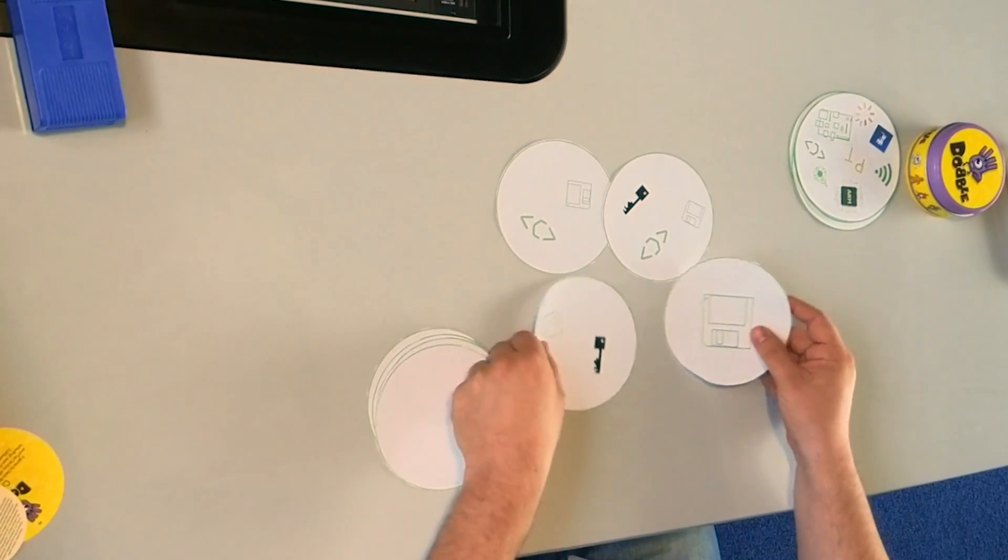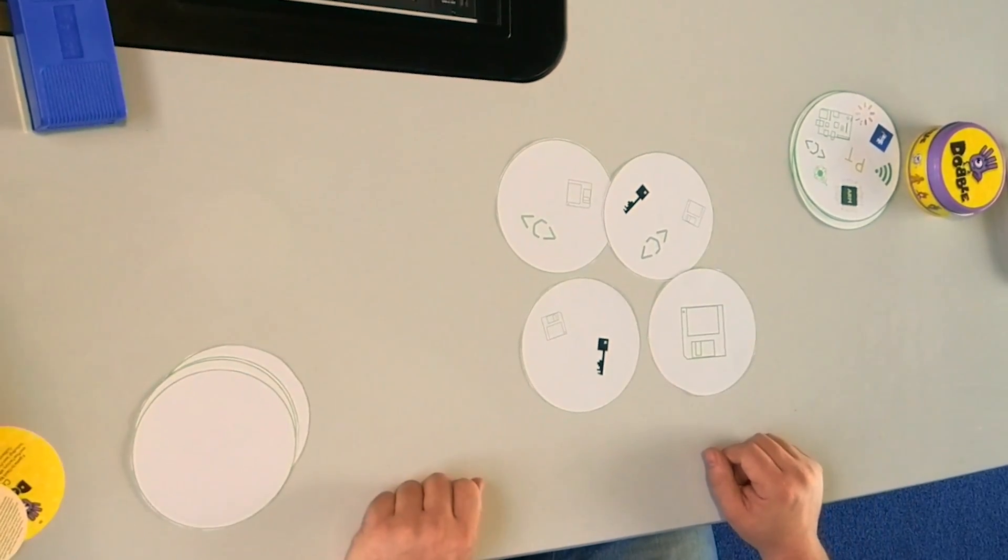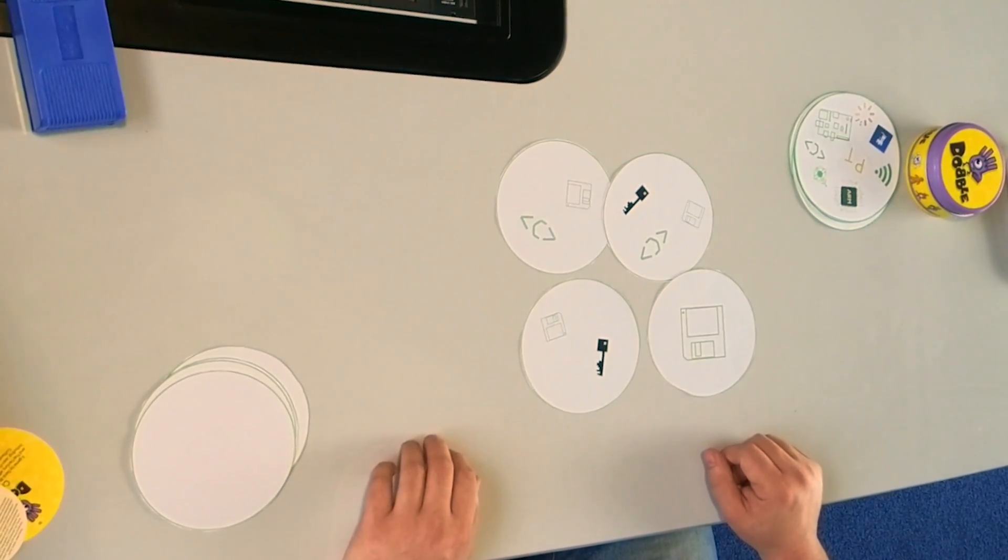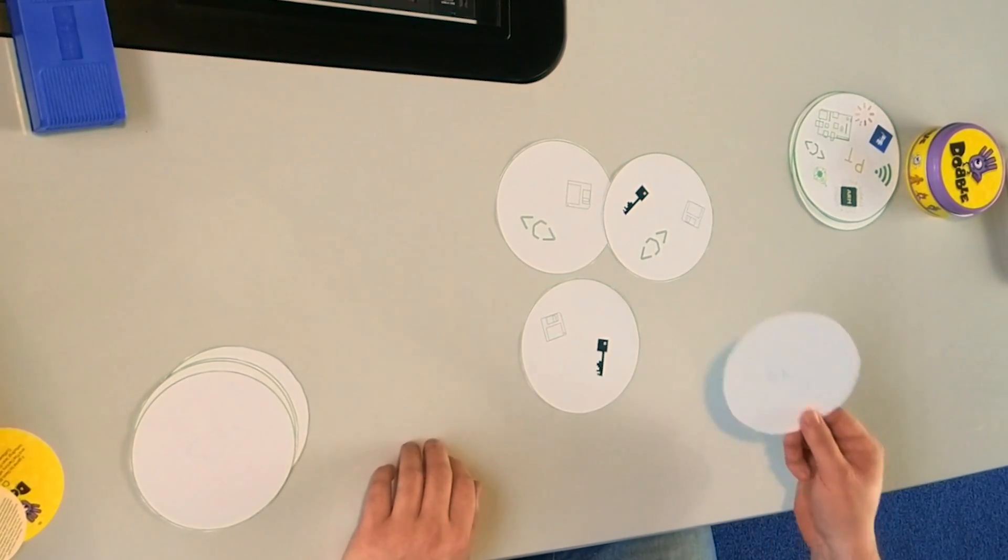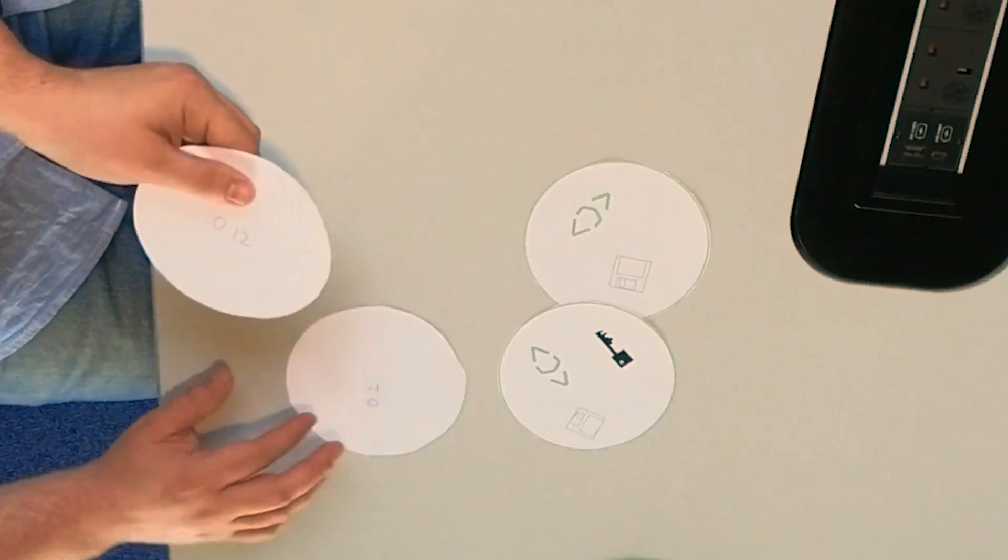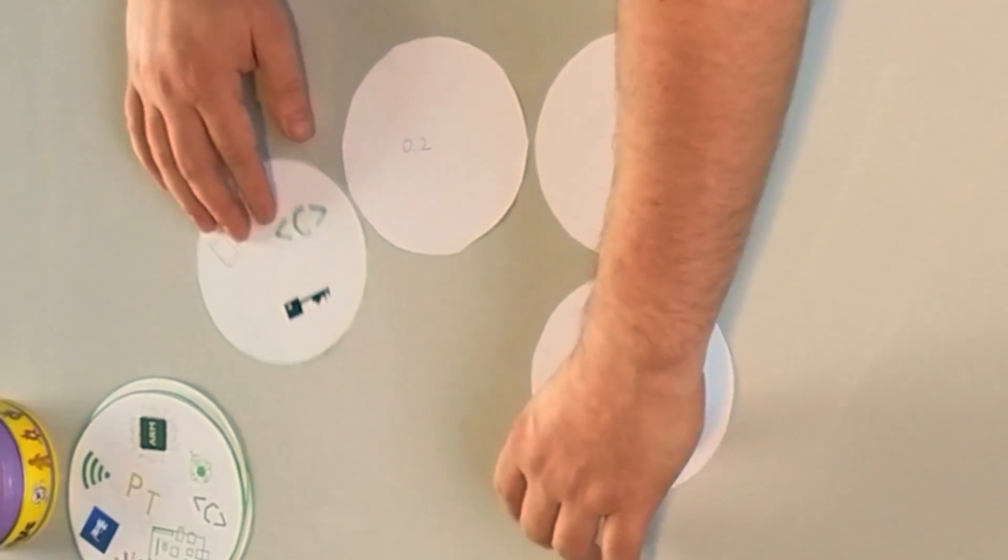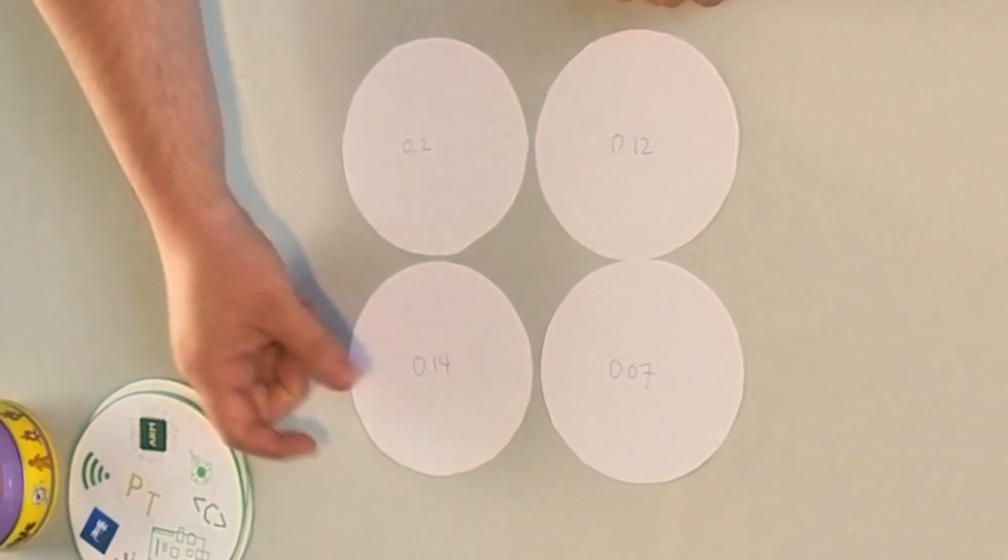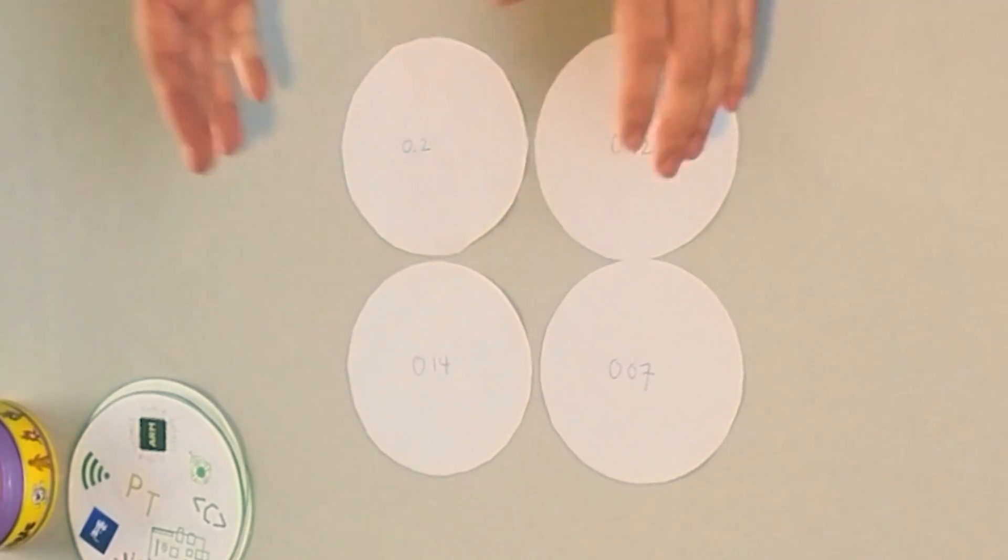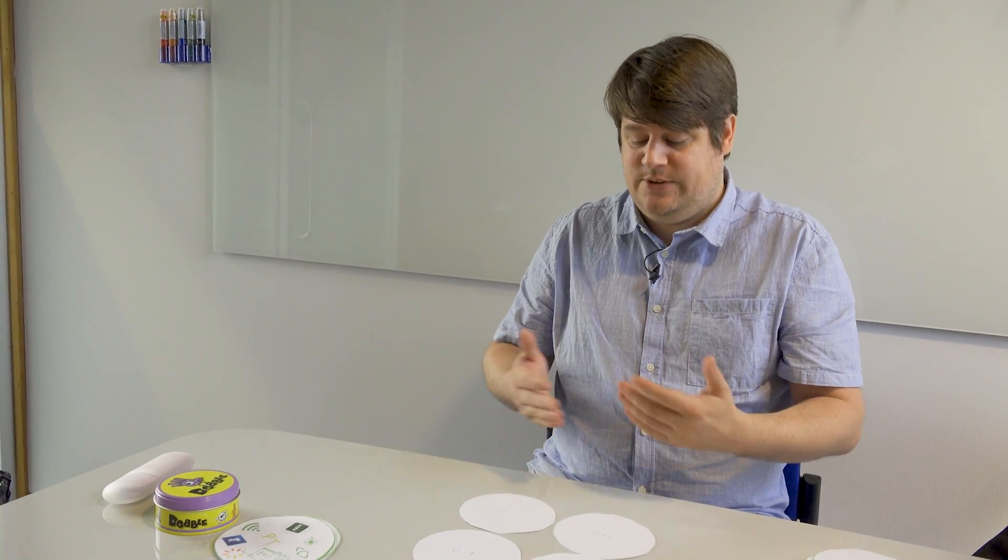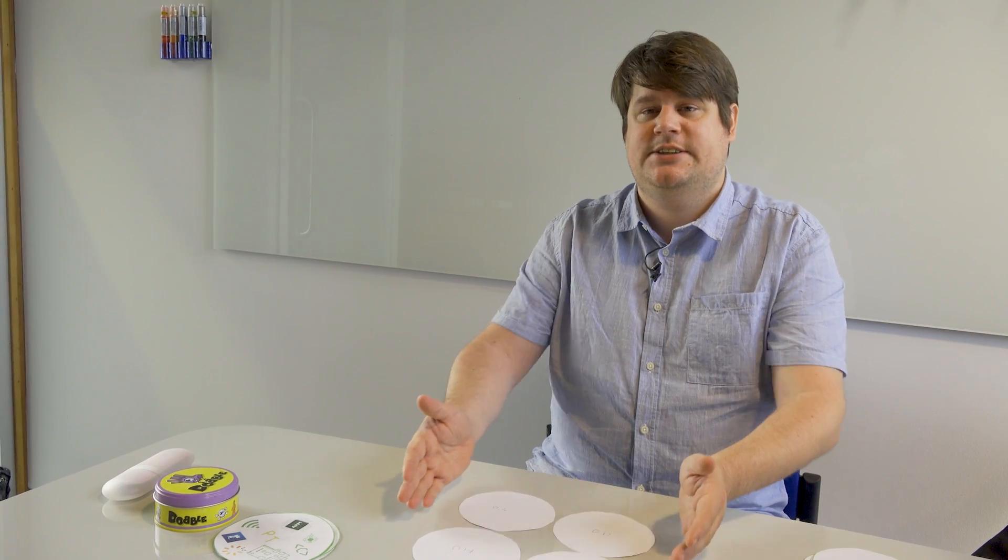Let's consider again the scenario where Steve always tells the truth. And we can look at the probability that these things are true. 0.2, 0.12, 0.07 and 0.14. So those are the probabilities of each of these realities being true. Then the probability that I'll make the right decision is simply the sum of these, which is 0.53, just over half.